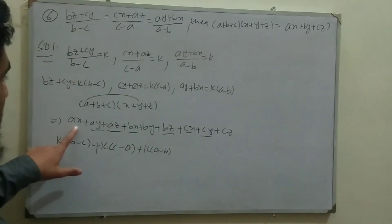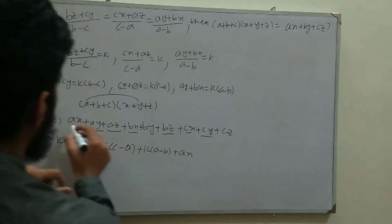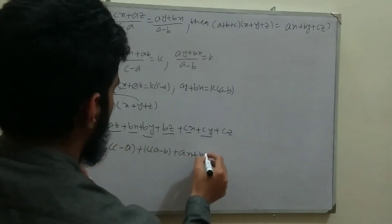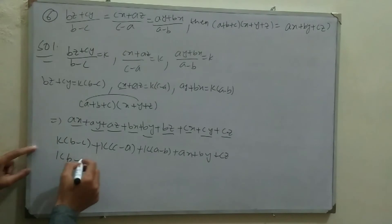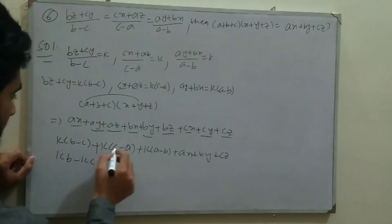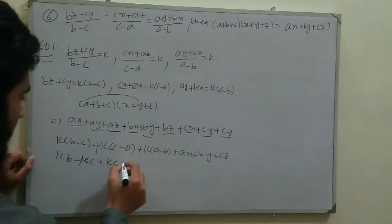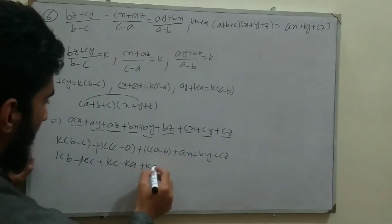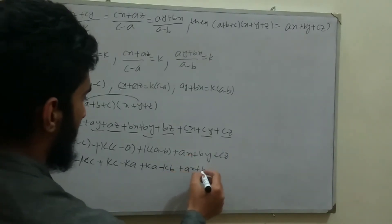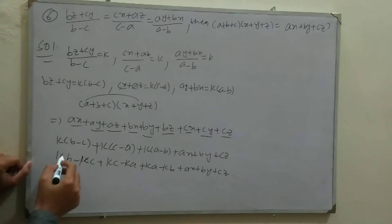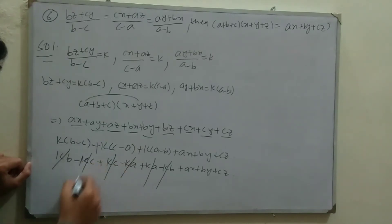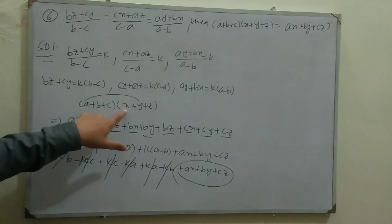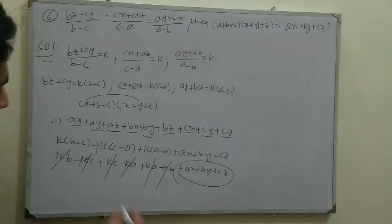Combining everything: k(b−c) + k(c−a) + k(a−b) + ax+by+cz. Expanding: kb−kc+kc−ka+ka−kb + ax+by+cz. The k terms all cancel: kb cancels with −kb, ka cancels with −ka, kc cancels with −kc. We are left with ax+by+cz. Hence proved that (a+b+c)(x+y+z) = ax+by+cz.